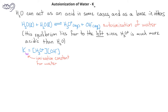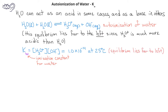At 25 degrees Celsius, Kw has a value of 1.0 times 10 to the minus 14. That very, very small number indicates that this equilibrium lies far to the left. This relationship between the hydroxide ion and hydronium ion concentration and the equilibrium constant applies to all aqueous solutions.